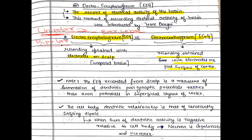In the bipolar method, there are two active electrodes, and both are placed over the scalp. They can be used for measuring the potential difference between two lobes — for example, one electrode can be placed over the frontal lobe and another over the parietal lobe.